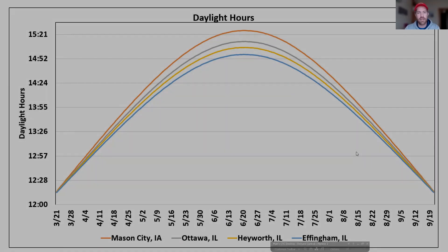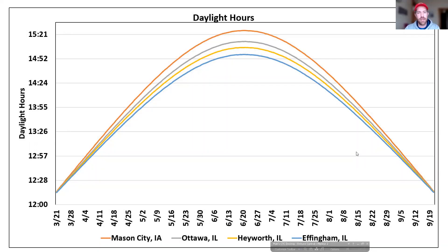Soybean flowering is driven by two major aspects, the first of which is day length or night length. If we look at four different cities, we can see how that day length is different at the summer solstice and how it changes through the year.